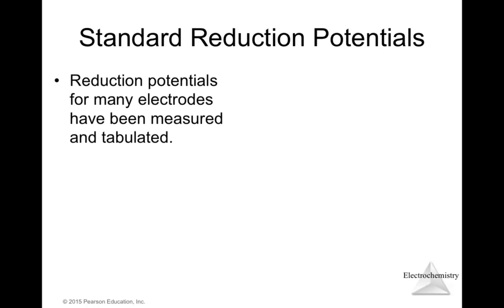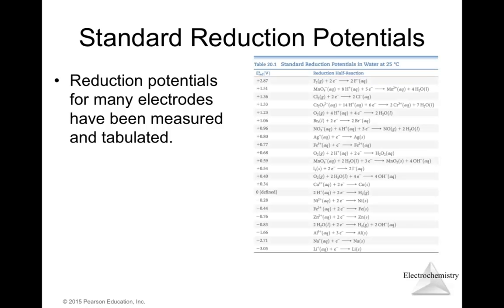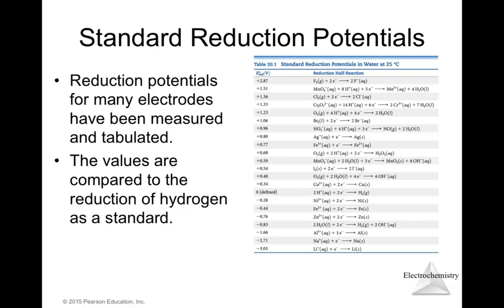Standard reduction potentials: reduction potentials for many electrodes have been measured and tabulated. The tables represent the potential of reduction, so for fluorine the oxidation potential would be the inverse — negative 2.87 volts. The tables always show the standard reduction potential for half-reactions. These values are compared to the reduction of hydrogen as a standard, measured using a standard hydrogen electrode as the reference.